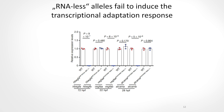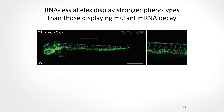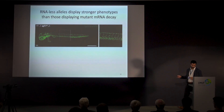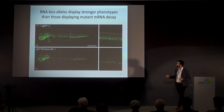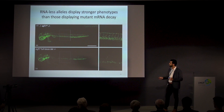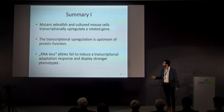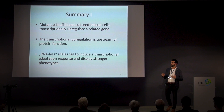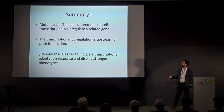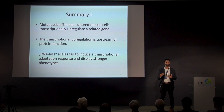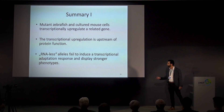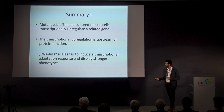Even more interestingly, we observed stronger phenotypes in those RNA-less alleles compared to alleles that display mutant mRNA decay. Going back to the HBGF-A gene: in the allele with a four-nucleotide deletion, zebrafish larvae show normal vasculature development similar to wild type. However, once we generate a full locus deletion mutant for that gene, you can see strong vascular defects that are similar to the morpholino phenotype. So mutant zebrafish and cultured mouse cells transcriptionally upregulate related genes upstream of protein function, and this is likely dependent on mutant mRNA degradation.